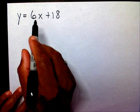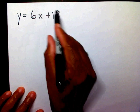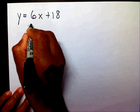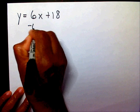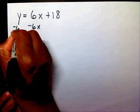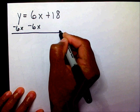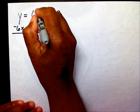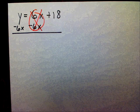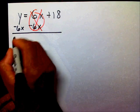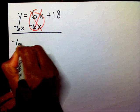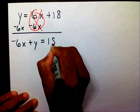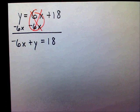In order to isolate my constant term of 18, I'm going to subtract 6x on both sides. The 6x's will cancel each other out. That's going to leave me with negative 6x plus y equals 18. It's in standard form now.